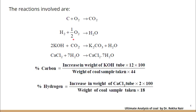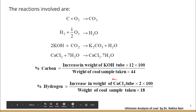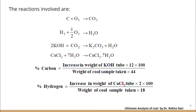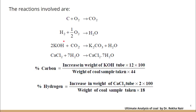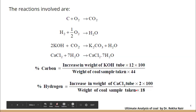Percentage of hydrogen is equal to the increase in weight of the calcium chloride tube due to absorption of water, divided by the weight of the coal sample taken, multiplied by 2/18, into 100. This is because 2 grams of hydrogen reacts with 16 grams of oxygen to form 18 grams of water, so 2 grams of hydrogen gives 18 grams of water.